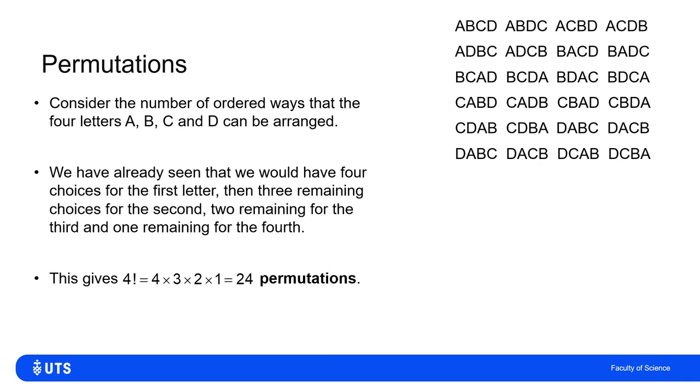Unsurprisingly, if I work it out, a quarter of them have A first, a quarter of them have B first, a quarter of them have C first, a quarter of D first. Similarly, a quarter of them have A second, a quarter of them have B second, and so on.